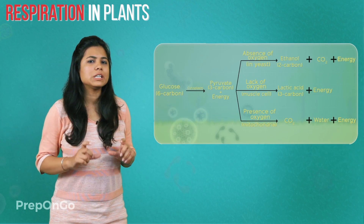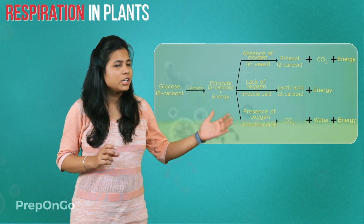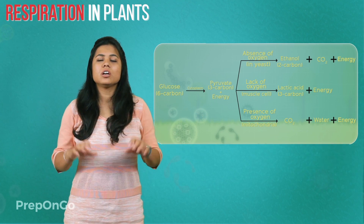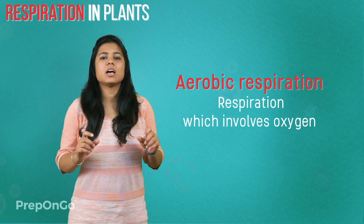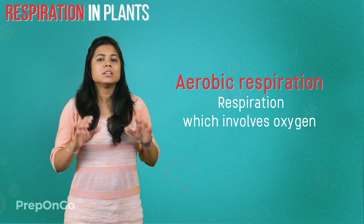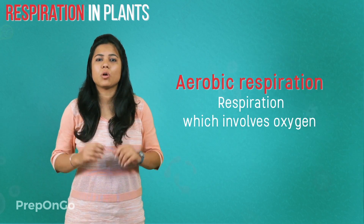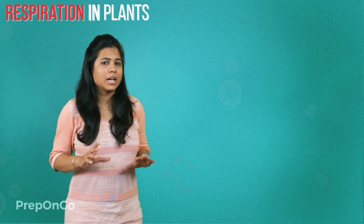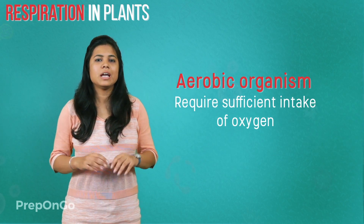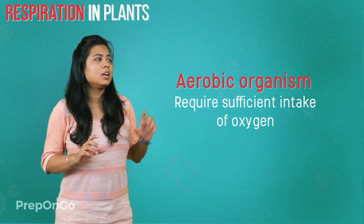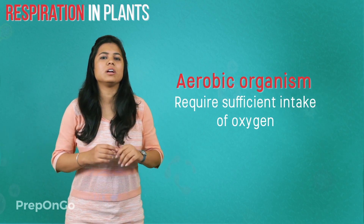Do you remember what was the last condition we had discussed in the respiration? Yes, it involved oxygen. This kind of respiration where oxygen is involved, we called it as aerobic respiration. Since the aerobic respiration involves the pathway depending upon oxygen, the aerobic organisms need to ensure that there is sufficient intake of oxygen. This is done by the large intracellular spaces which ensure all the cells are in contact with the air.